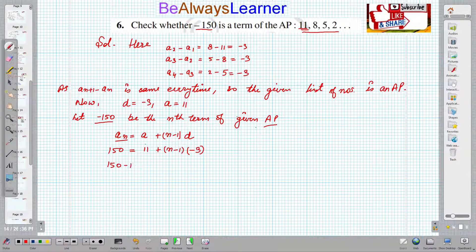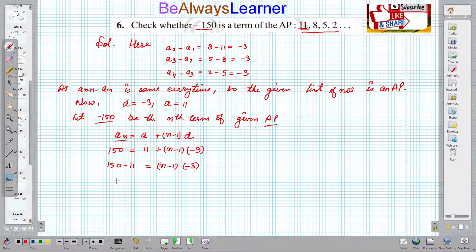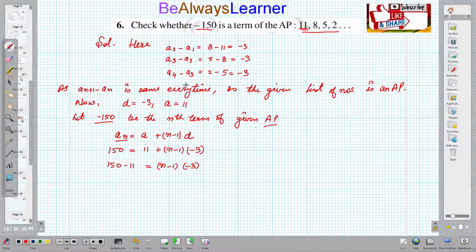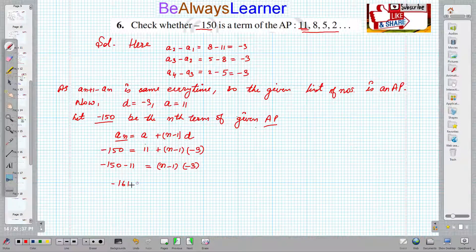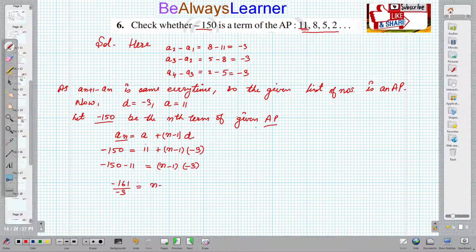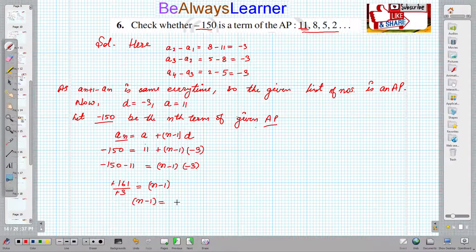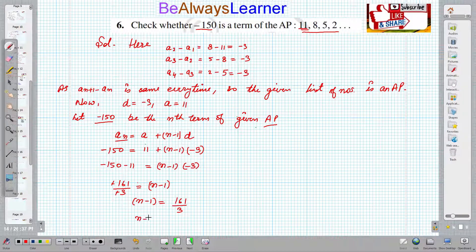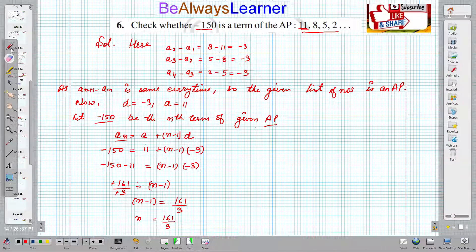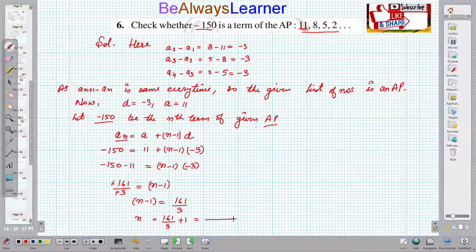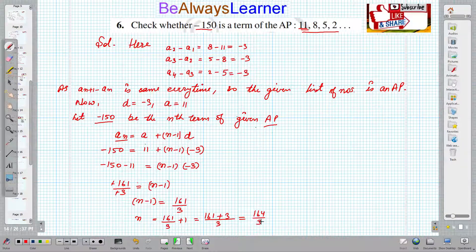So -150 = 11 + (n-1)(-3). -150 minus 11 equals (n-1) times -3. This becomes -161 equals (n-1) times -3. The negatives cancel out. There is no common factor, so n minus 1 equals 161/3. We can write n equals 161/3 plus 1. Taking LCM, this becomes (161 + 3)/3 = 164/3. 164 is not divisible by 3.